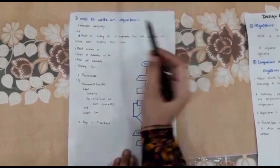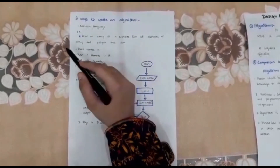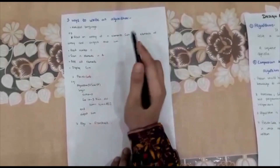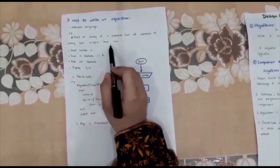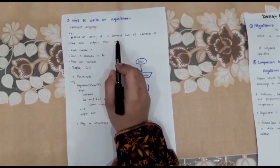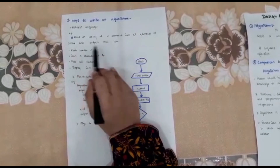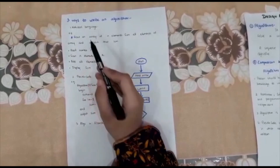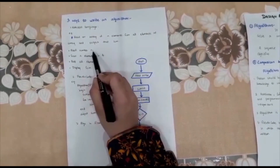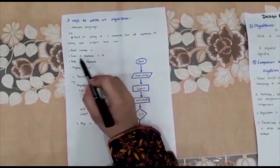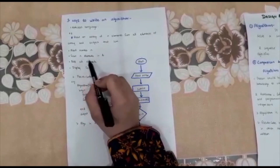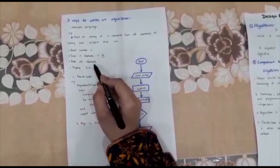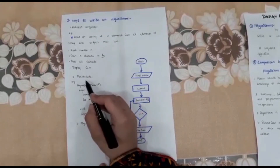Next, there are three ways to write an algorithm. The first way is natural language. For example, the problem is: read an array of N elements, sum all elements of the array, and output that sum. In natural language, we write it as: read number N; scan N elements in array A; add all elements; and display the sum.